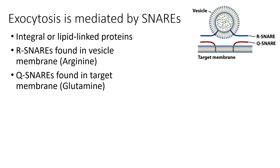SNAREs are either integral or lipid-linked proteins. There are two different types of SNAREs: R-SNAREs and Q-SNAREs. The R-SNAREs are shown in blue — they're called R-SNAREs because they have arginine in them, and we see them in the vesicle membrane extending out as a tether. Q-SNAREs are similar in function and structure, but their location is in the target membrane. Q-SNAREs are called Q-SNAREs because they contain glutamine — the one-letter code for glutamine is Q and for arginine is R.